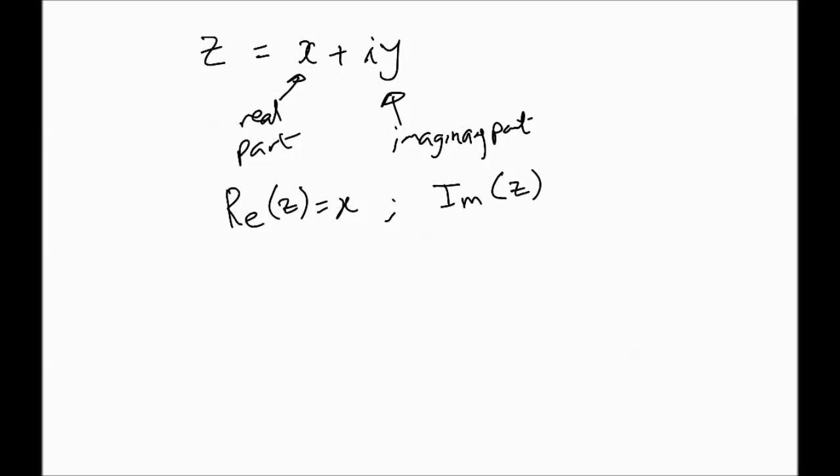Usually, we use the letter Z to represent complex numbers, and a complex number consists of a real part and an imaginary part. This is called its real part. This is the real part, and this one here, the Y is called the imaginary part. Y itself, and we use, there are operators, in fact. So, RE is the operator that gives us the real part. So, RE of Z is X, and IM, which is imaginary part of Z, is Y.